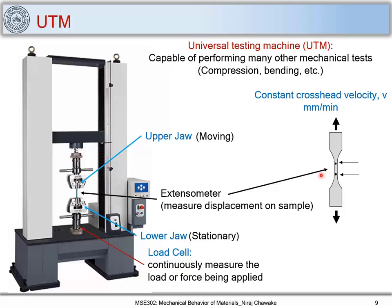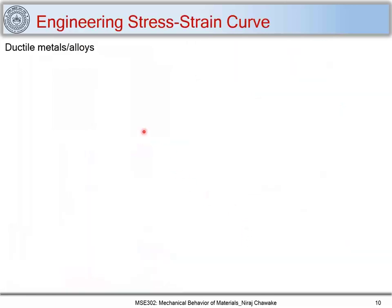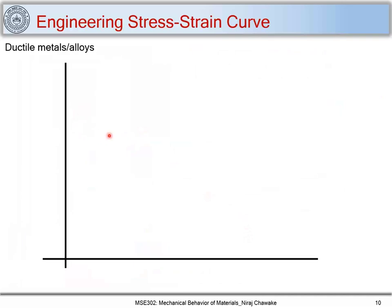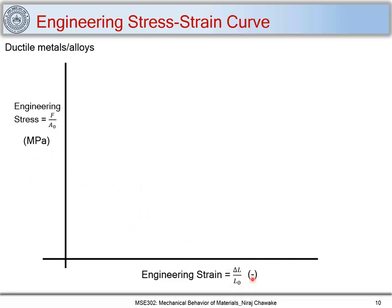I am not going into details of tensile testing as you will be dealing with it in your lab course. I have also shared a video on the UTM platform. What we get from this tensile test is load versus displacement data, which I convert to stress versus strain data. Engineering stress is defined as force divided by area, and engineering strain as delta L divided by L0. The units are MPa and strain is dimensionless.